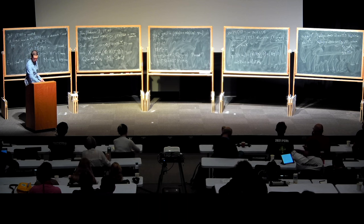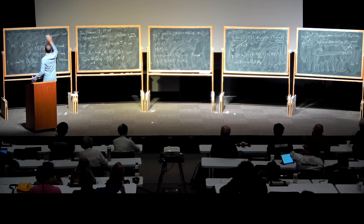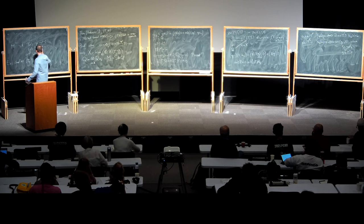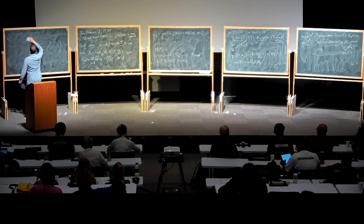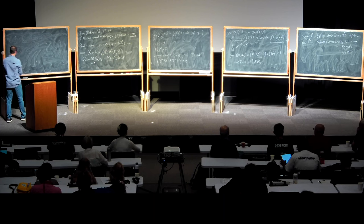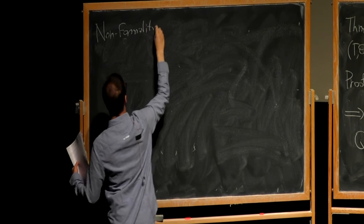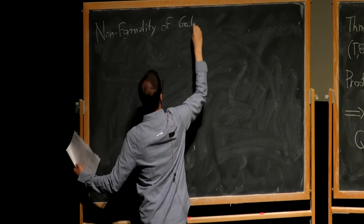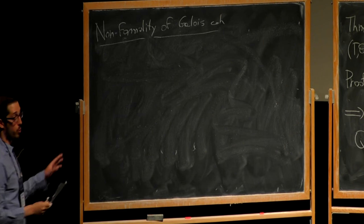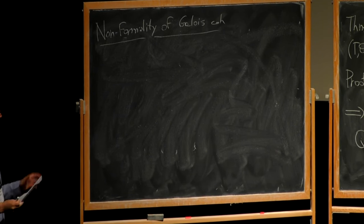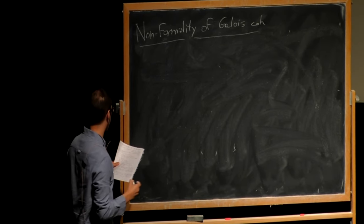In the remaining time I want to discuss a different topic: an application of Massey products to a question interesting also in the topological setting — namely, formality of DGAs, specifically non-formality of Galois cohomology. For DG rings, Massey products still exist — that's the upshot. But first let me mention the formality notion.